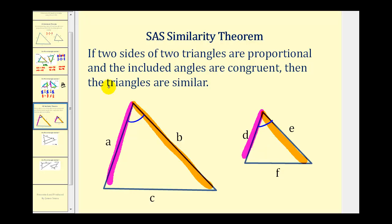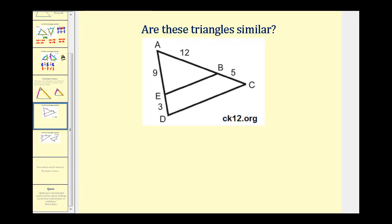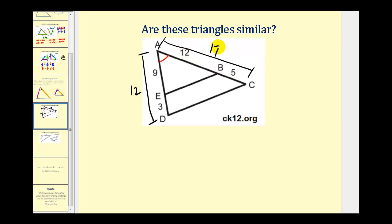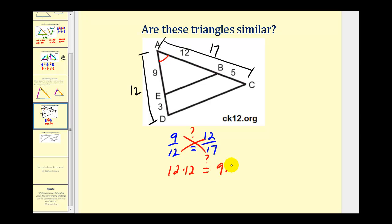Let's look at two examples of side-angle-side similarity. We want to determine if these two triangles are similar — we have a small triangle and a large triangle. We know angle A is congruent to itself, so now we need to make sure the corresponding sides are proportional. The length of one side is 9 plus 3, or 12, and the other side is 12 plus 5, or 17 units. So our proportion is: is 9 to 12 equal to 12 to 17? Cross-multiplying: is 12 times 12 equal to 9 times 17? That gives 144 versus 153. Since these aren't equal, these triangles are not similar.